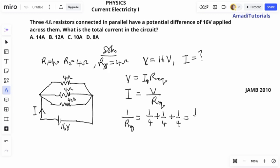which is the same thing as one over four times three. That one over four in three places gives us three over four. So we have one over R equivalent equals three over four.